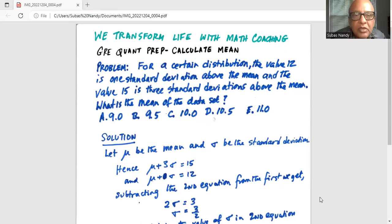For a certain distribution the value 12 is one standard deviation above the mean and the value 15 is three standard deviations above the mean. What is the mean of the data set?